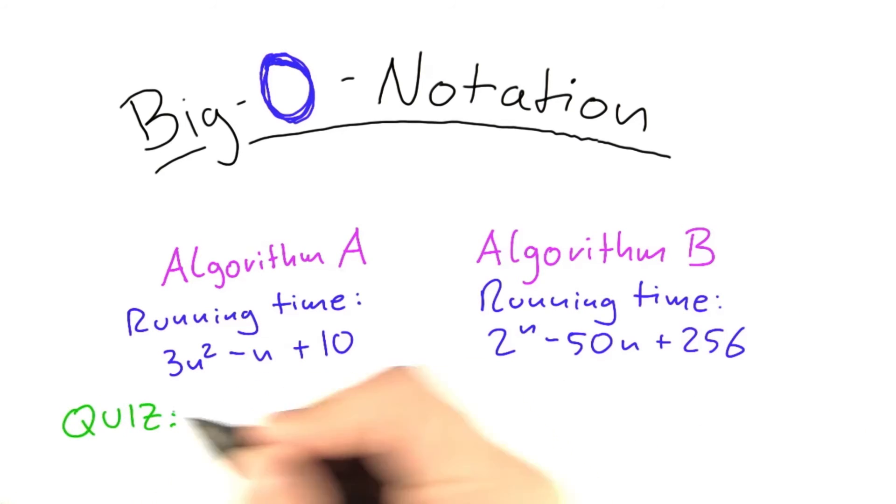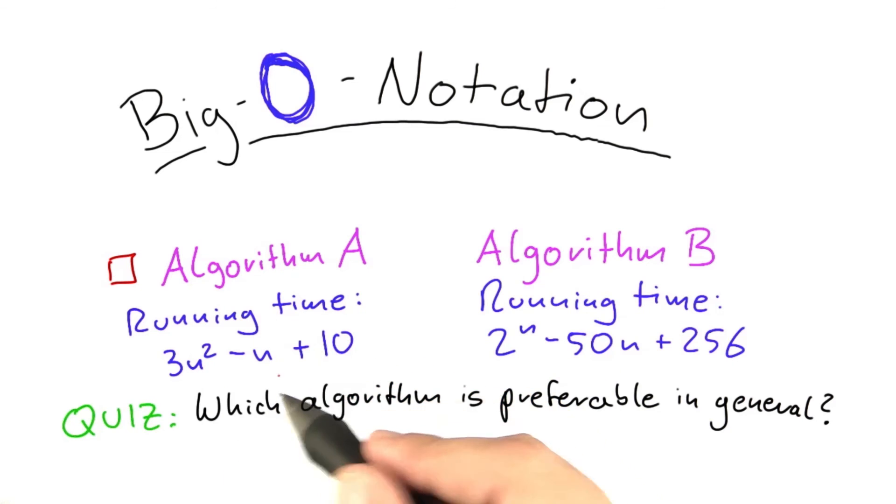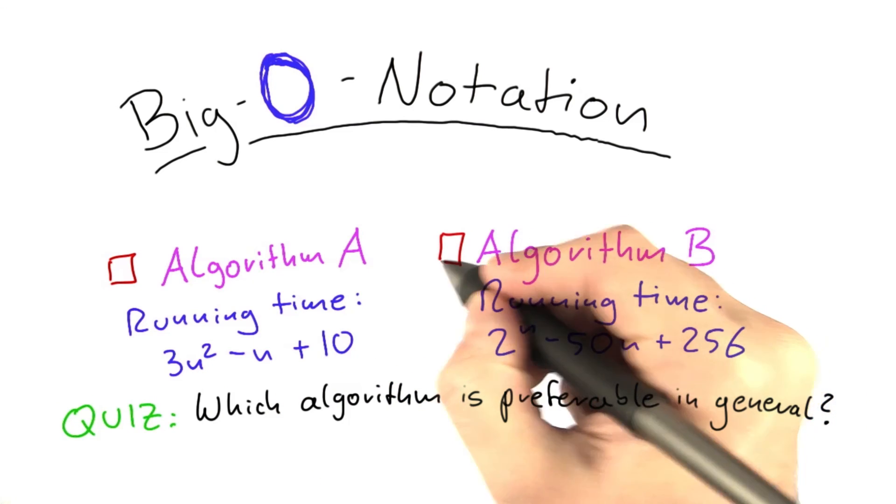So what I would like you to think about is which of these two algorithms you would prefer if you don't know anything about the input other than that you're going to get different sizes. So no other structural assumptions or anything else that you know. And I would like you to check this box if you think it's Algorithm A that you should take in general, and this box if you think it's Algorithm B.